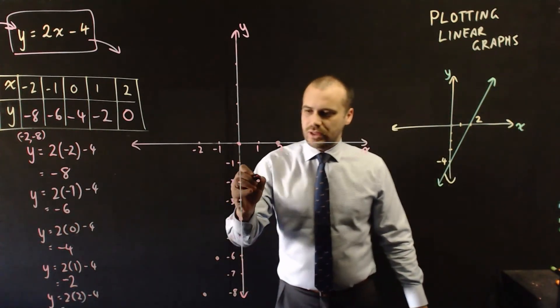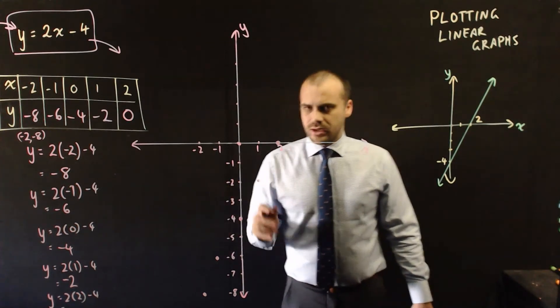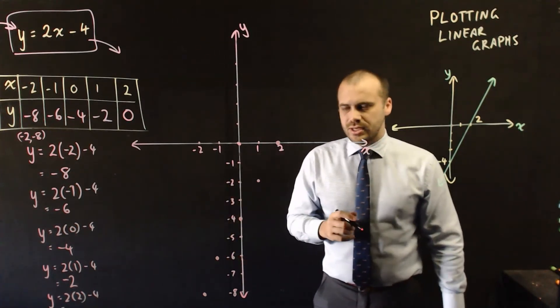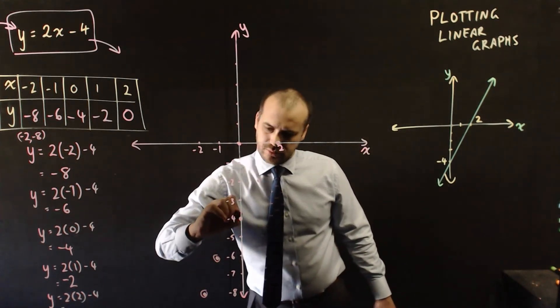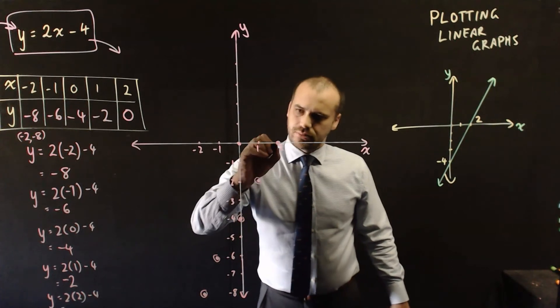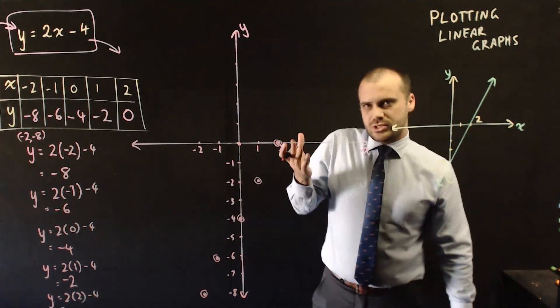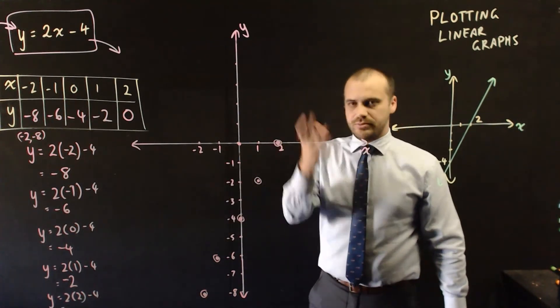Now, some teachers like X's. Some teachers like little dots. I like to do something a bit weird. I like a dot with a circle around it. But X's, dots, dots with circles around them, they're all fine.